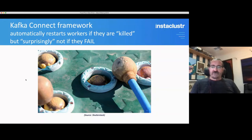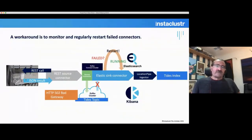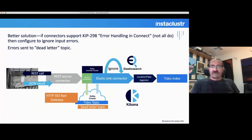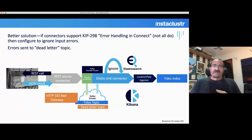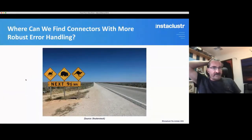The Kafka Connect framework itself is pretty robust — it automatically restarts workers if they are killed or die for some random reason, but surprisingly not if they go into the failed state. I had experimented with killing workers in the past and they just pop up like whack-a-mole. One workaround is to monitor and regularly restart the failed connectors, but that's a bit of a hack. Doing more investigation, I found a better solution: KIP-298, called Error Handling in Connect. If the connectors actually support that KIP correctly, you can configure them to ignore input errors, and errors are sent to a dead letter topic.